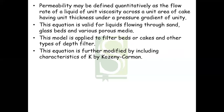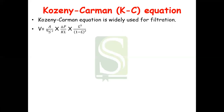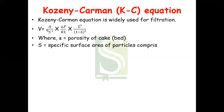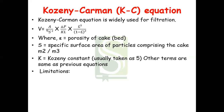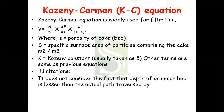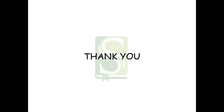This equation is further modified by including characteristics of K by Kozeny-Carman. The last theory is proposed by Kozeny-Carman. The Kozeny-Carman equation is widely used for filtration. In the equation, epsilon is the porosity of the cake, S is the specific surface area of the particles, and K is the Kozeny constant, usually taken as phi; other terms have been seen in the previous equations. The limitation of this equation is that it does not consider the fact that the depth of the granular bed is lesser than the actual path traversed by the fluid. The actual path is not straight throughout the bed but is sinuous or tortuous. This was all about the theories of filtration. Thank you for watching.